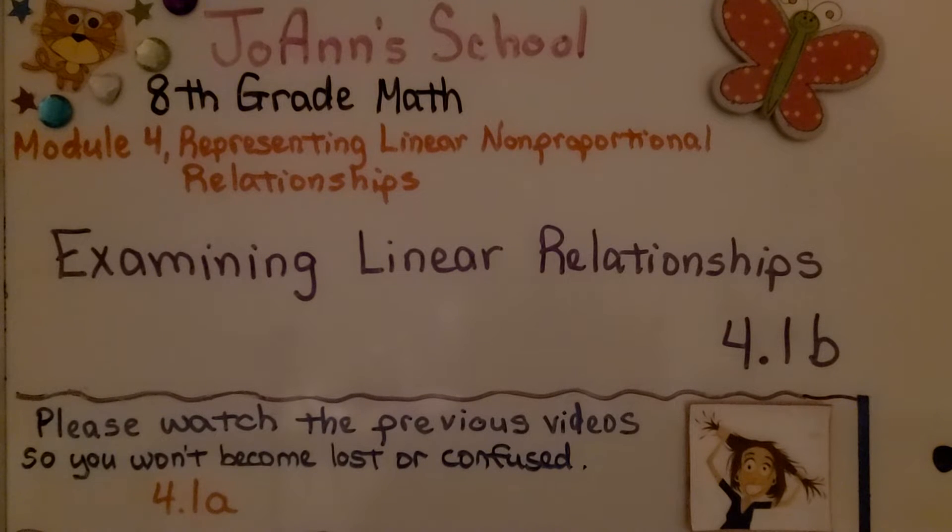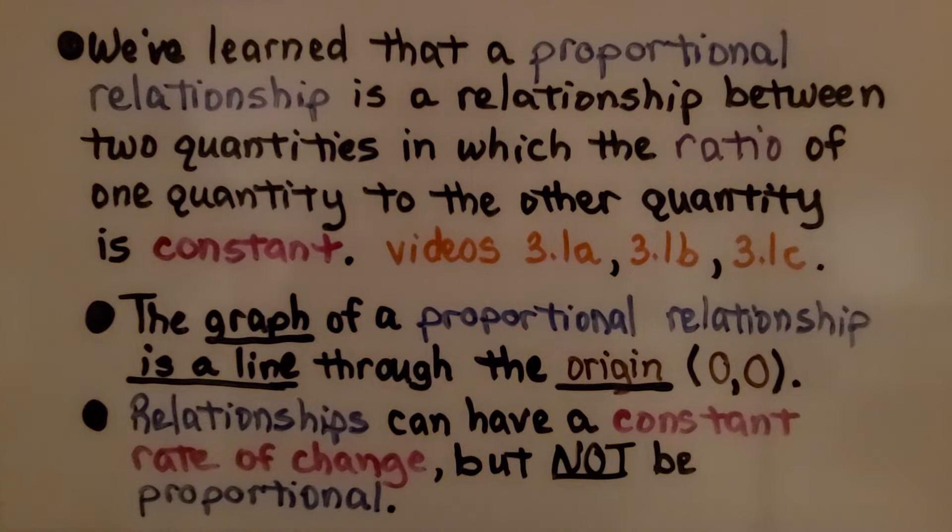Examining Linear Relationships, Lesson 4.1b. We've learned that a proportional relationship is a relationship between two quantities in which the ratio of one quantity to the other quantity is constant. We learned that back in 3.1a through c, and I've got those linked in the description if you've missed them.